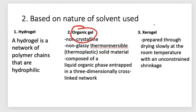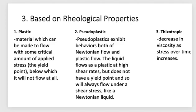Serogels are solid gels with low solvent concentration, produced by evaporation of solvent or freeze drying. They are usually prepared through drying slowly at room temperature with unconstrained shrinkage. Another classification is based on rheological properties — the properties that govern the way things deform or flow. Gels typically exhibit non-Newtonian flow properties, and based on rheological properties, there are three types of gels.